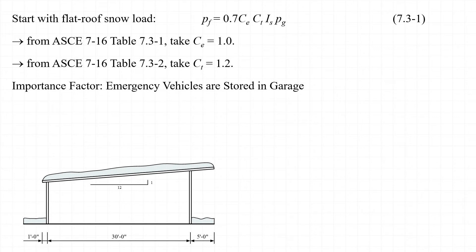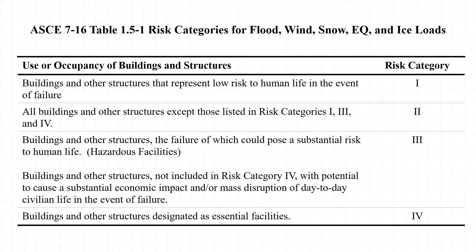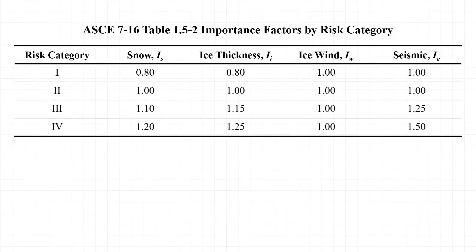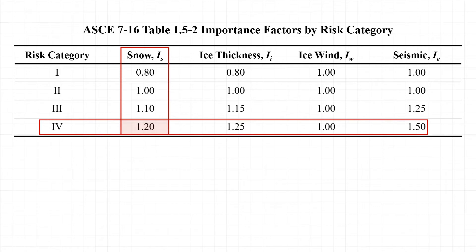The third factor is the importance factor, I sub s, which depends on the occupancy and risk category of the structure. Referring to Table 1.5-1, since this structure is used to store emergency vehicles, it is designated as an essential facility and risk category 4 applies. From Table 1.5-2, the importance factor for snow is 1.20.